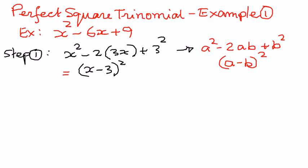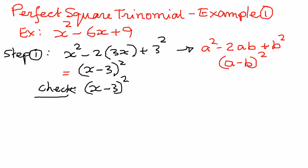So x squared minus 6x plus 9, we can write it as the square of a binomial: x minus 3, raised to the power of 2. Now, for a quick check — if we take x minus 3 to the power of 2 and expand it out, we expand it as x minus 3 times x minus 3. I'm going to do it the long way and also show you an easier way to do the expansion.